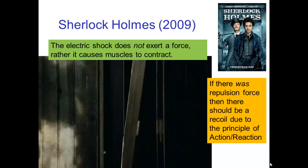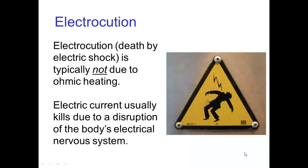If there was some kind of repulsive force, you should remember that there would be a recoil due to the principle of action-reaction. Having talked about ohmic heating, you might wonder if that is the cause of death by electric shock, known as electrocution. It turns out that typically ohmic heating is not the cause of death. Rather, if the electric current is fatal, it's due to a disruption of the body's electrical nervous system.